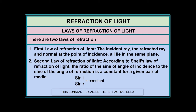The second law of refraction is also known as Snell's law. It states that the ratio of the sine of the angle of incidence to the sine of the angle of refraction is a constant for a given pair of media. If you change the angle of incidence and take readings again and again, the ratio sine i to sine r remains constant. This constant is called the refractive index for that given pair of media.